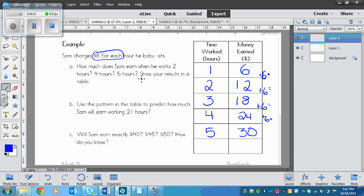So we've got 2 hours, 4 hours, and 5 hours. We've solved that. He would earn $12 if he works 2 hours, $24 if he works 4 hours, and $30 if he worked 5 hours.